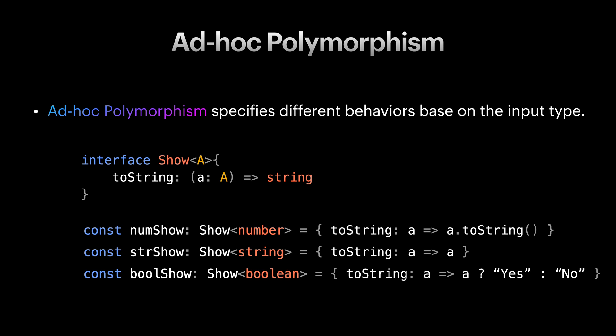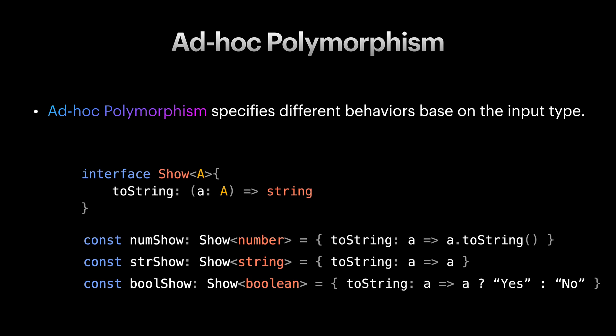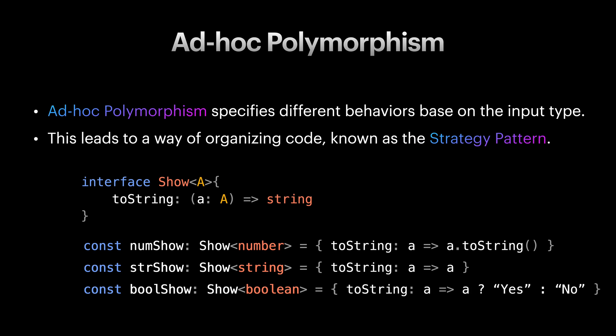In ad hoc polymorphism since these implementations are constant you can pass them as parameters to functions and return them from functions. This often leads to a technique for organizing code which is known as strategy pattern. Ad hoc polymorphism is being used so much in functional programming that some languages have a specific syntax for it. One of the reasons for this is to reduce the amount of boilerplate code typically used when implementing and designing the strategy pattern.